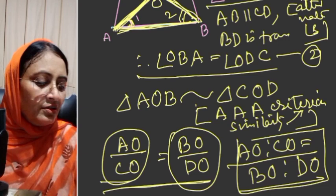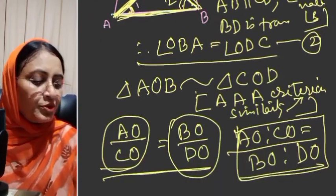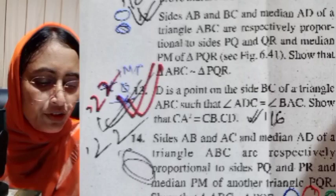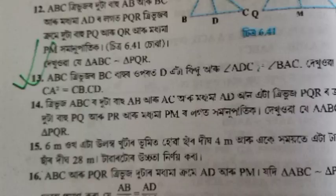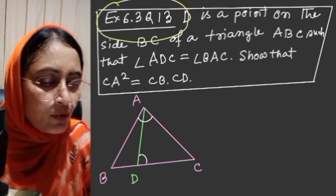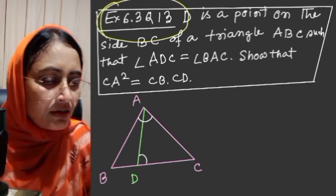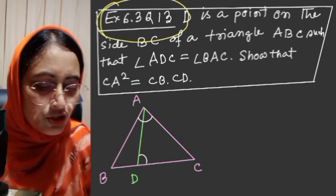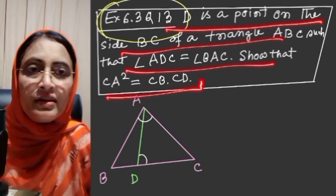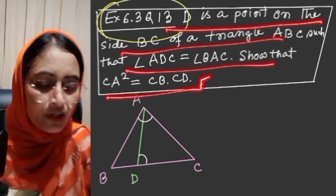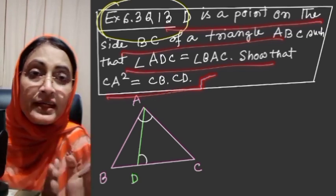This is the proof. Now we will do question number 13. These basic questions are very important and are repeated. Question number 13: D is a point on the side BC of a triangle ABC such that angle ADC is equal to angle BAC. Show that CA² is equal to CB into CD.